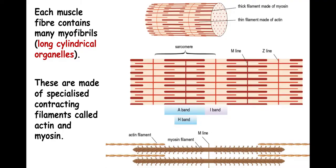On this image we can see actin and myosin filaments that make up a sarcomere. You do need to be able to label an image like this in your exam, and you need to know which parts and which bands are made of actin, myosin, or both.